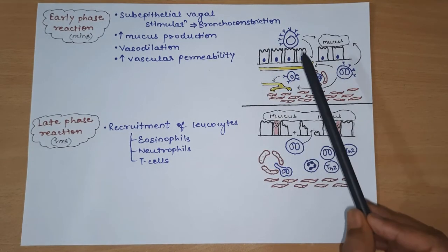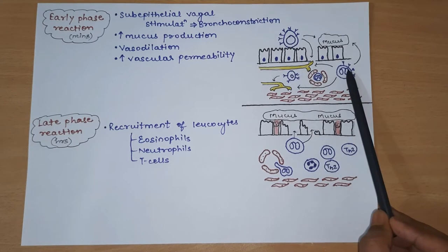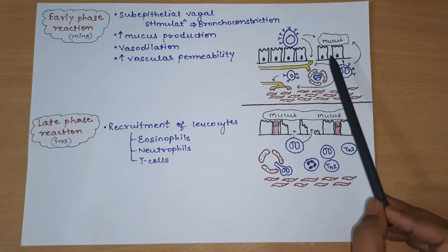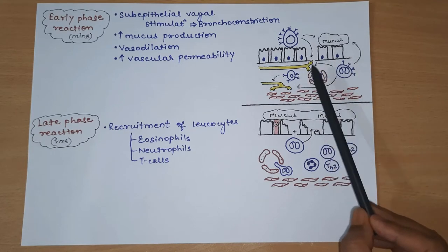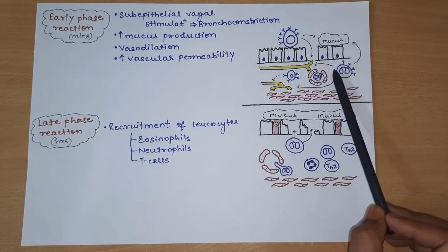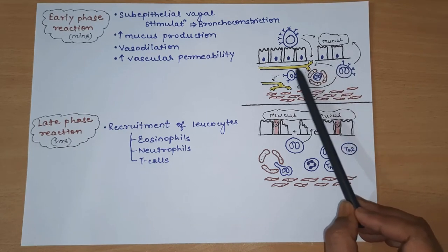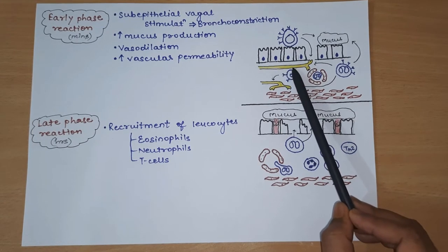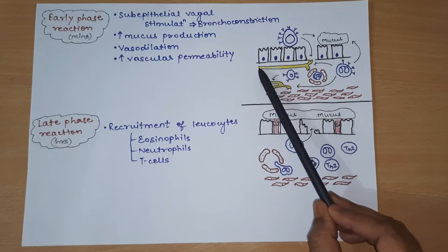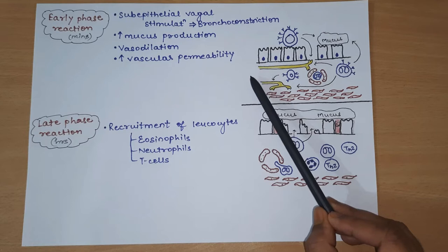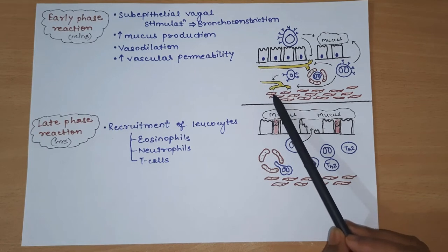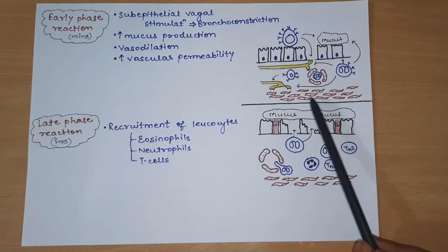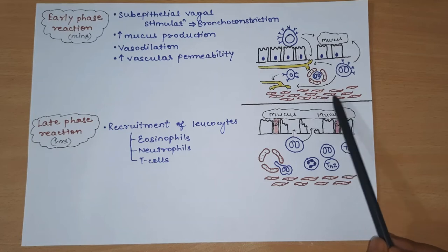In this diagram we can see that mast cells and eosinophils have been stimulated, they undergo degranulation, and many mediators are released. These mast cells and eosinophils stimulate the subepithelial vagal nerve. When this vagal nerve just under the epithelium is stimulated, the efferent vagal nerve causes contraction of smooth muscles present in the bronchial wall, finally resulting in bronchoconstriction.